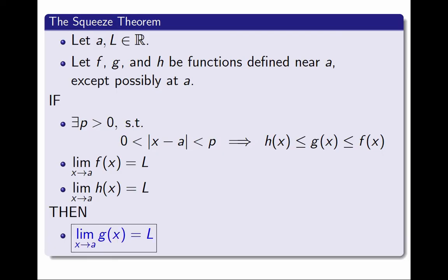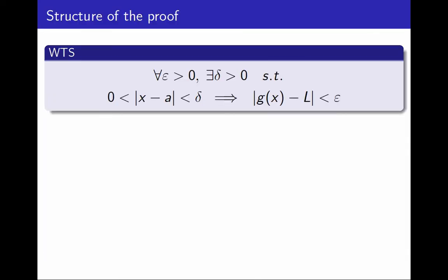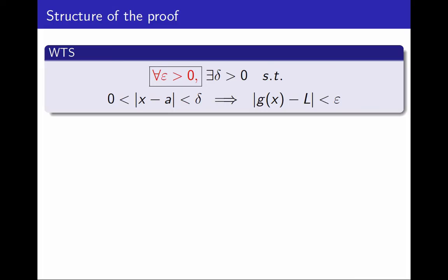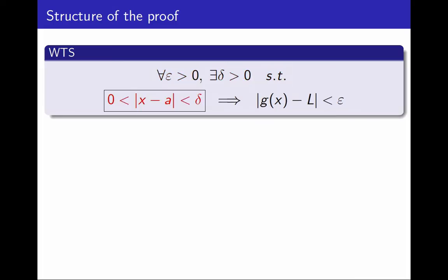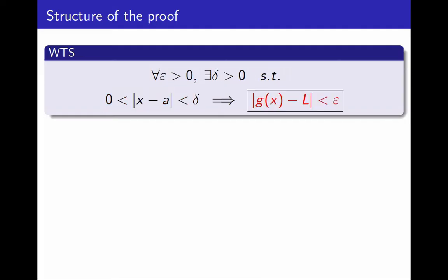To begin with, like I normally do for proofs like this, I will focus on the conclusion — what I want to show. I will write down the definition of the statement in that conclusion, because that will show me what the proof should look like. I want to show that the limit as x approaches a of g equals L, or equivalently, that for every positive number epsilon, there exists a positive number delta, such that if the distance between x and a is between 0 and delta, then the distance between g and L is less than epsilon. That's just the definition of this limit being L.